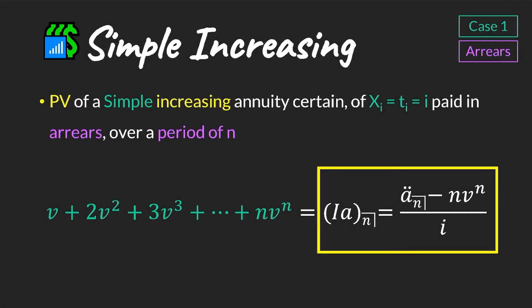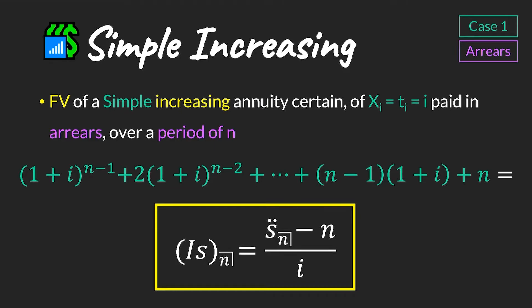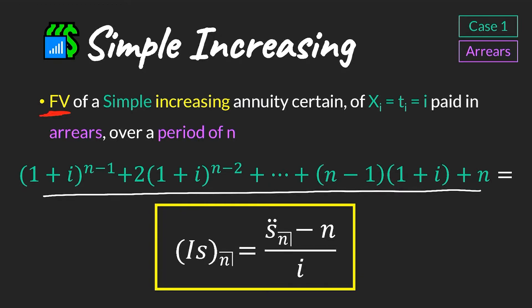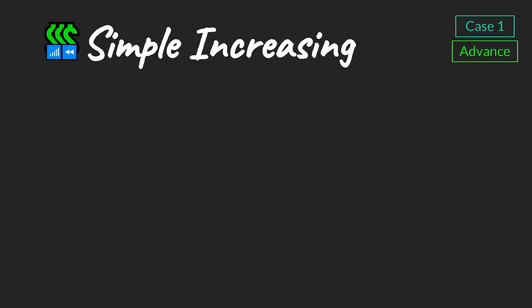More formally, we write the present value of a simple increasing annuity where the cash flows xᵢ at time i equal i — so the i-th cash flow equals i itself — for cash flows paid in arrears over a period of n. When we see this cash flow profile we know we can use the increasing annuity formula. Similarly, to work out the future value of a simple increasing annuity we look for the same cash flow profile and use the corresponding notation.